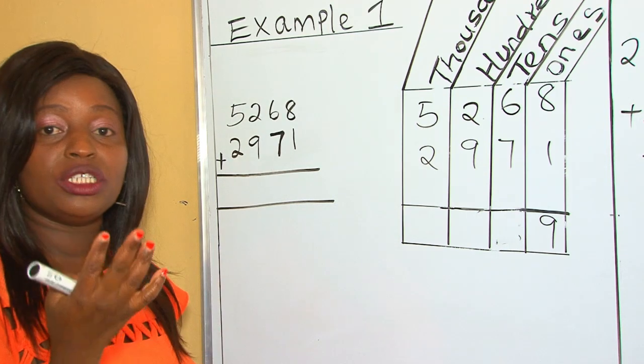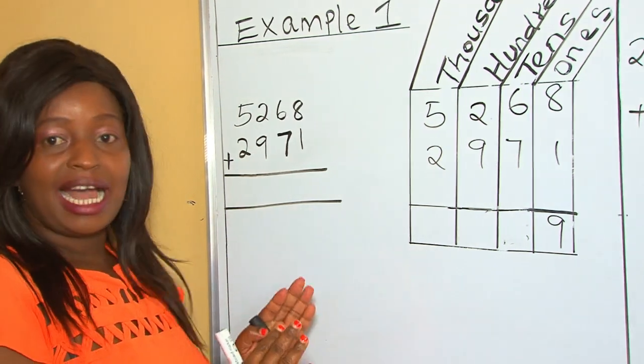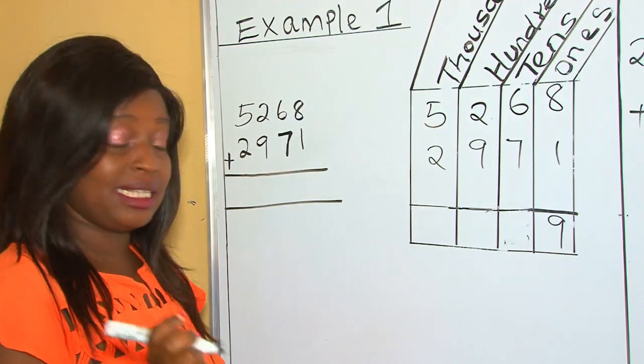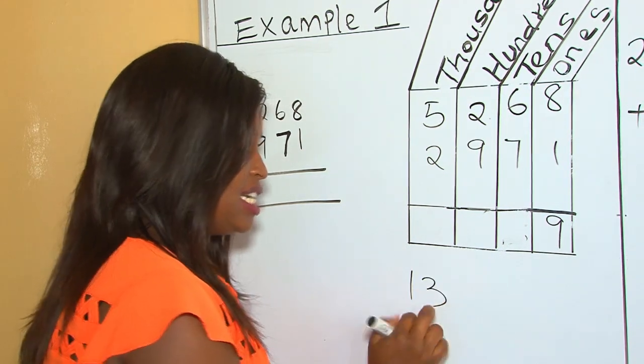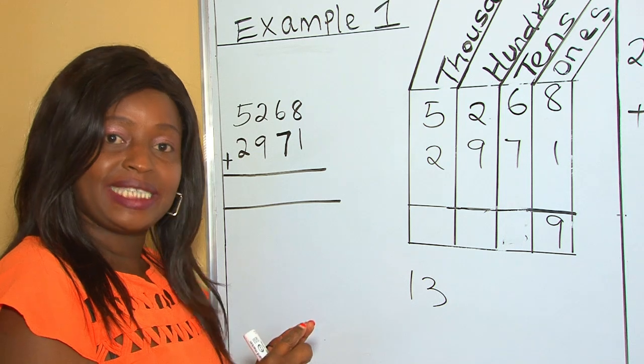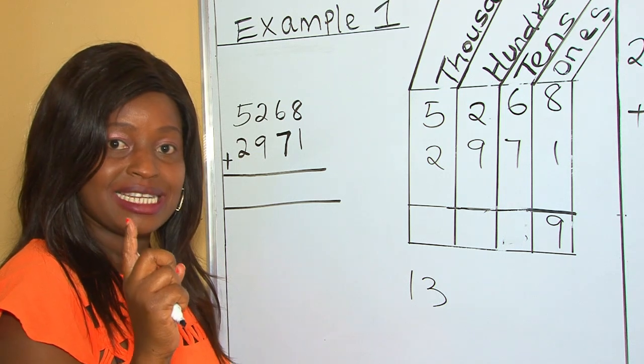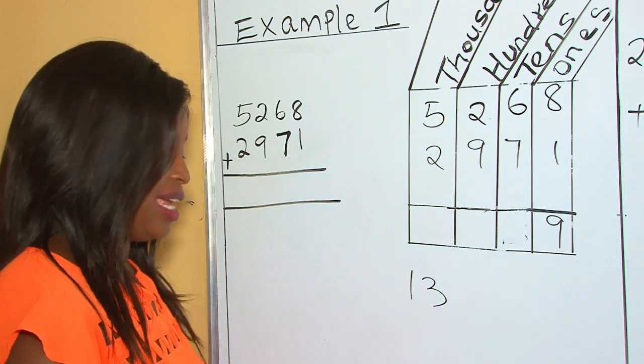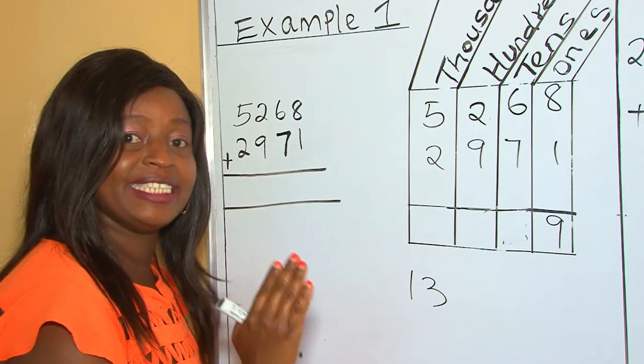We regroup now according to tens and hundreds. Remember our answer there is 13. In 13, we have 10 tens. 10 tens makes 100. What do we mean? That is, if I have 10 tens.